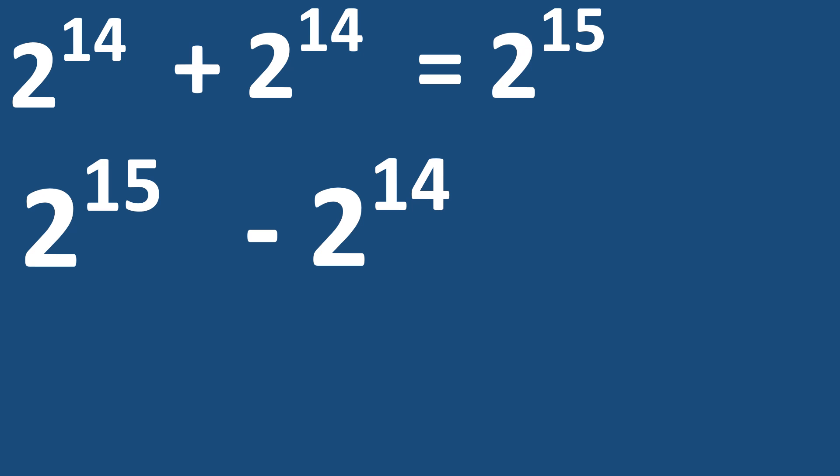Therefore, if we take 2 raised to the power of 15 and subtract 2 raised to the power of 14, we get 2 raised to the power of 14. This clearly confirms that 2 raised to the power of 15 minus 2 raised to the power of 14 equals 2 raised to the power of 14.